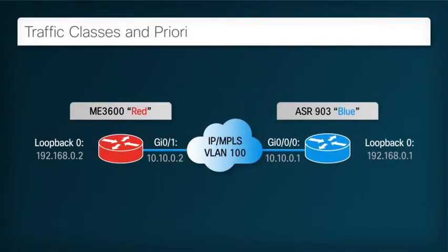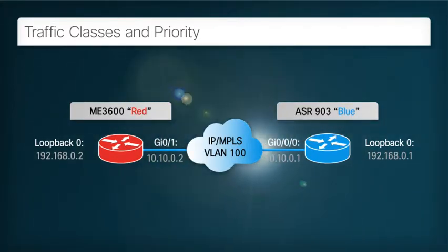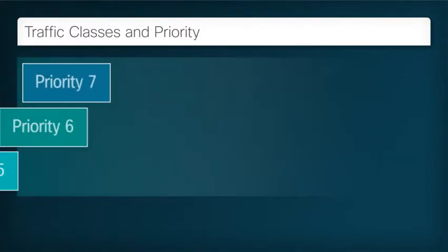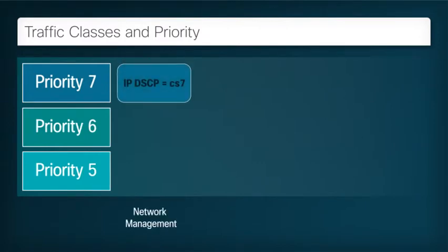Traffic Classes and Priority. Different classes of traffic flow between the two routers. In a typical network, it's also very likely that a large amount of transit traffic passes through both of them. Network management traffic is of the highest importance because it is necessary to ensure the stability of the network. It must be treated with high priority and handled to make sure such traffic is always forwarded, no matter what the underlying network load or conditions may be.